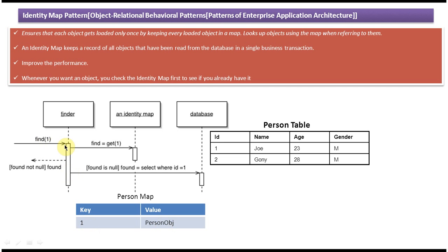So the first time a request comes to the Finder, it checks the identity map, it's not there, so it hits the database and gets the person object and puts it in the person map. The second time a request comes to the Finder, it checks the identity map with the key — the person object is there — so it returns the person object directly. In this case it won't hit the database again for the second, third, fourth, fifth, or any subsequent request.